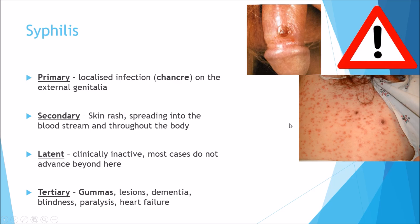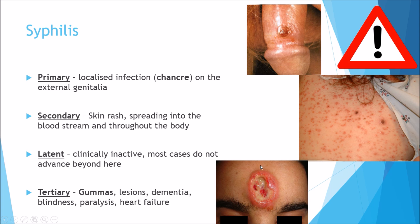After this you reach the latent stage, which is a clinically inactive stage. Most cases of syphilis do not extend beyond this point, as the body either fights off the bacteria or antibiotics have successfully kicked in. However, in some cases they can advance to a fourth stage — the tertiary stage — where gummas and lesions form, and possibly dementia, blindness, paralysis and heart failure kick in. A gumma forms as a massive pus- and blood-filled sac on the skin, which is incredibly sore and painful.